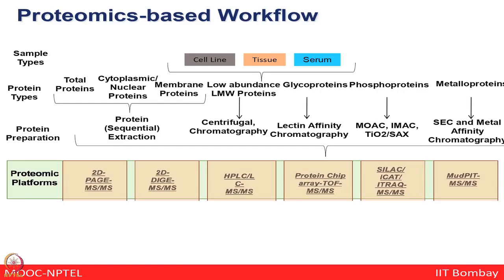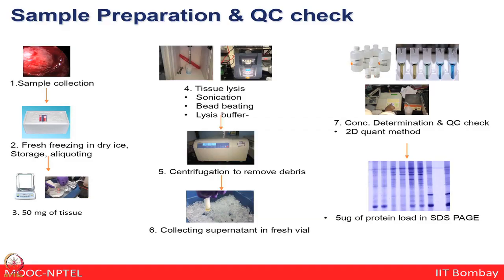Coming back to the proteomics-based workflow: you can use a variety of sample types — tissues, serum, cell culture, or any biospecimen. After doing good protein preparation, where you need to know your system very well and perform good protein extraction and separation, you can use various platforms for investigation — mass spectrometry-based approaches, 2D-PAGE followed by mass spectrometry, quantitative mass spectrometry, shotgun proteomics, or complementary technologies like microarrays and SPR. Sample collection requires ethics approval, clinician/pathologist supervision, flash freezing, and immediate protein extraction.